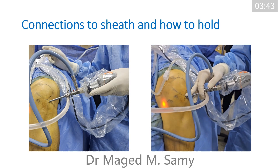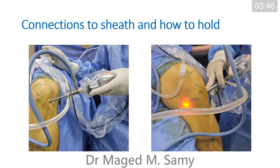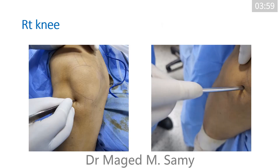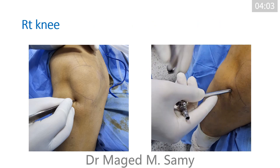These are the connections: the lens with the camera, the light source, irrigation fluid from one side, and the suction tube from the other. Hold the scope securely as shown so you can easily control it and rotate the light cable to change your field. This is a right knee — the stab incision is made with the number 11 knife blade upwards, with the sheath directed toward the intercondylar notch.